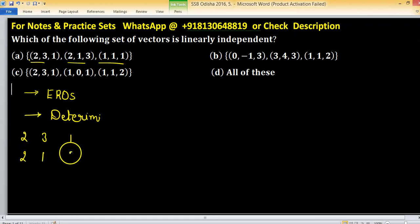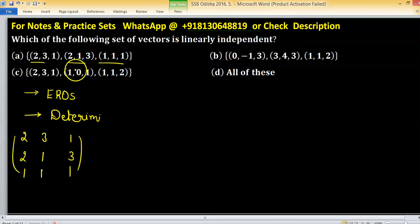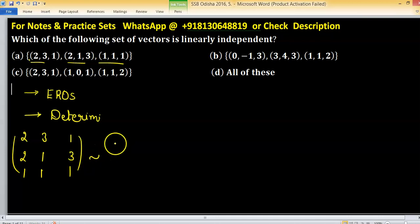and last is 1 1 1. This is my matrix representation of the corresponding set. So you can arrange rows, means interchange rows. So 1 1 1, 2 1 3, and 2 3 1.